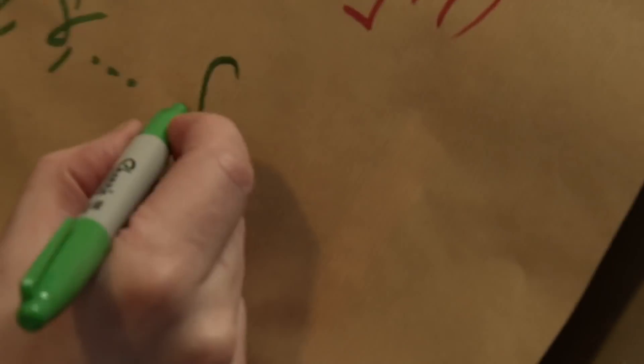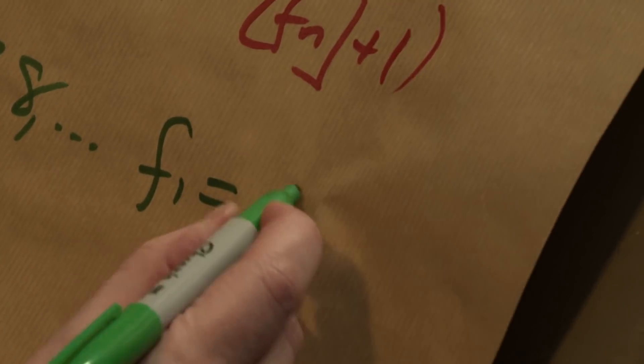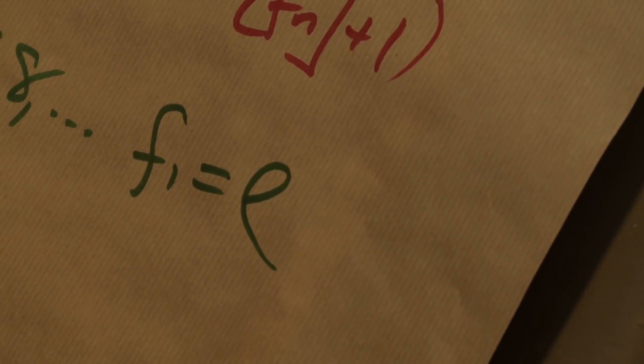There is a constant that will generate this sequence using the same formula, just a different constant. And the constant that generates the integers — we'll call it F1 — is E: Euler's number. Euler's number, with the formula, will generate the integers. It's an integer-generating constant.